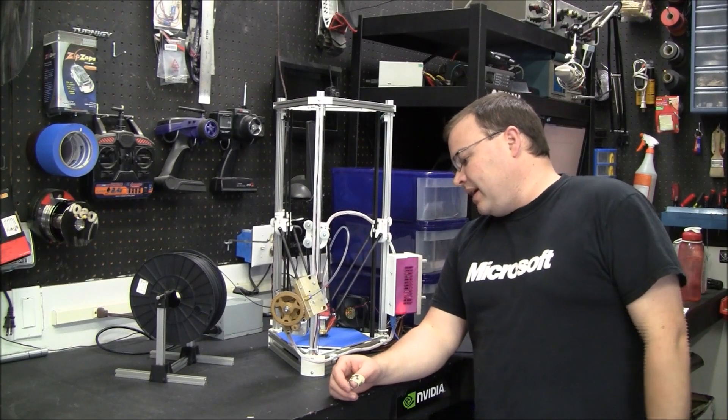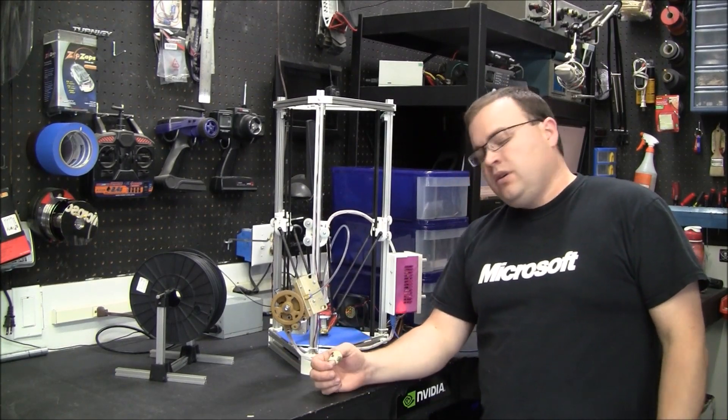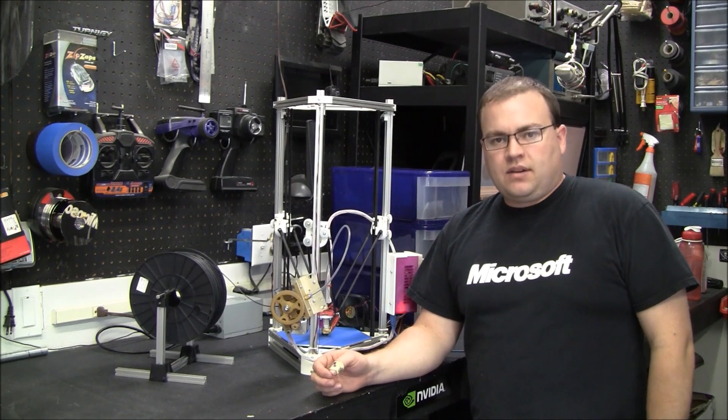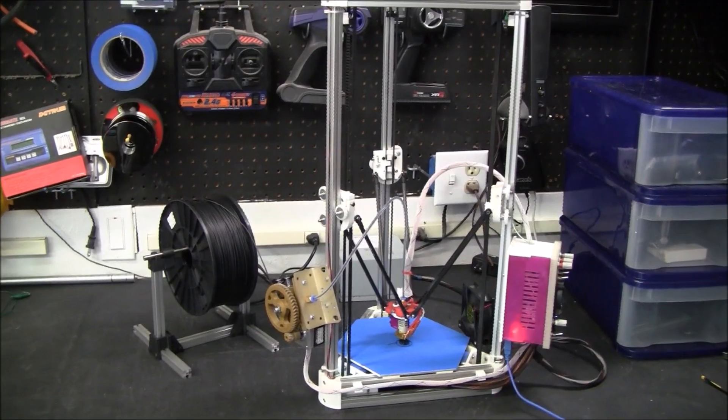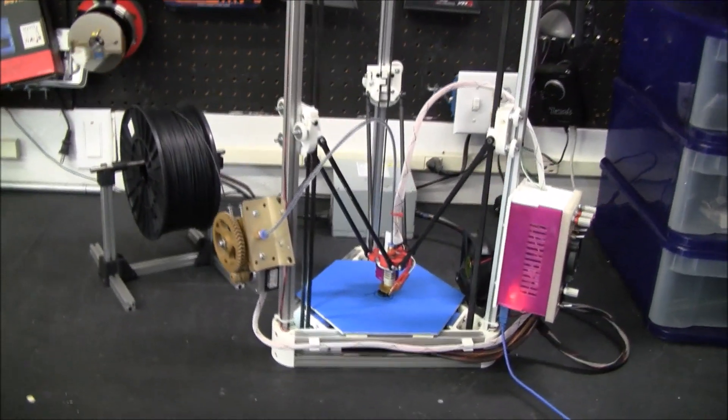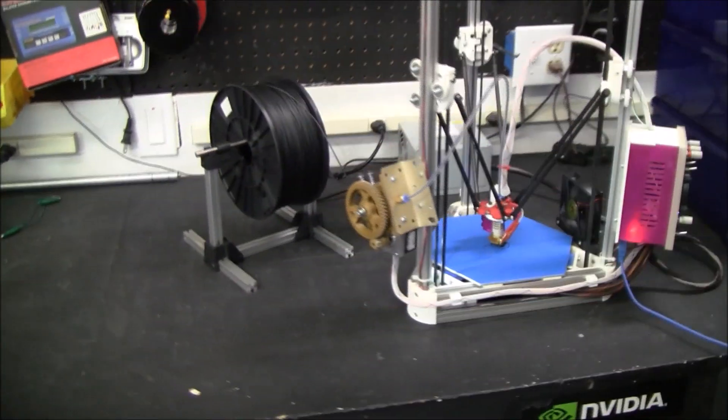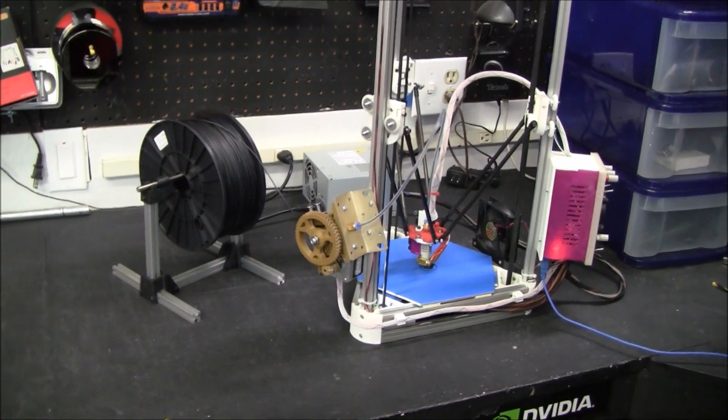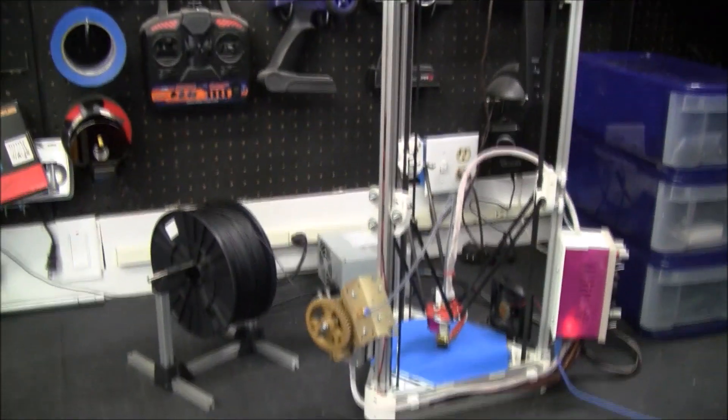In this video I'm going to talk about 3D printer accessories and modifications. This particular printer is called a Kossel Mini. It's one of the many variations of RepRap-like open 3D printers that you can build yourself.